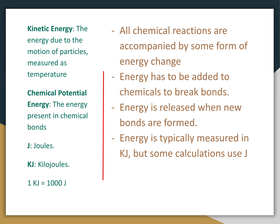All chemical reactions come with some type of energy change, because in every chemical reaction bonds get broken and then bonds get formed. The breaking of bonds adds potential energy to a chemical, and the releasing of that potential energy occurs when new bonds get formed. The energy that gets added and released is transferring between chemical potential energy and kinetic energy. Kinetic energy is the energy of motion of particles, which we actually measure as temperature. We typically measure this energy change in kilojoules, but sometimes we will measure it in joules.